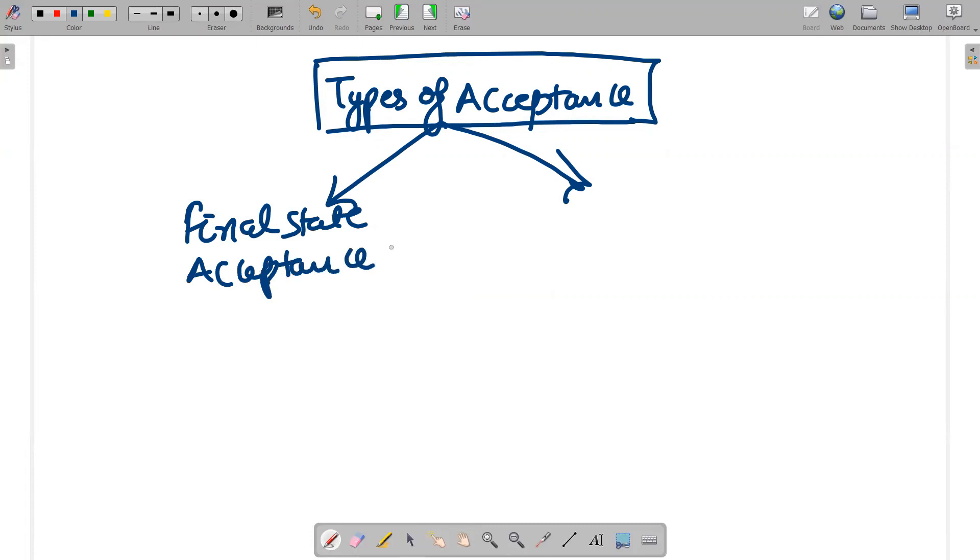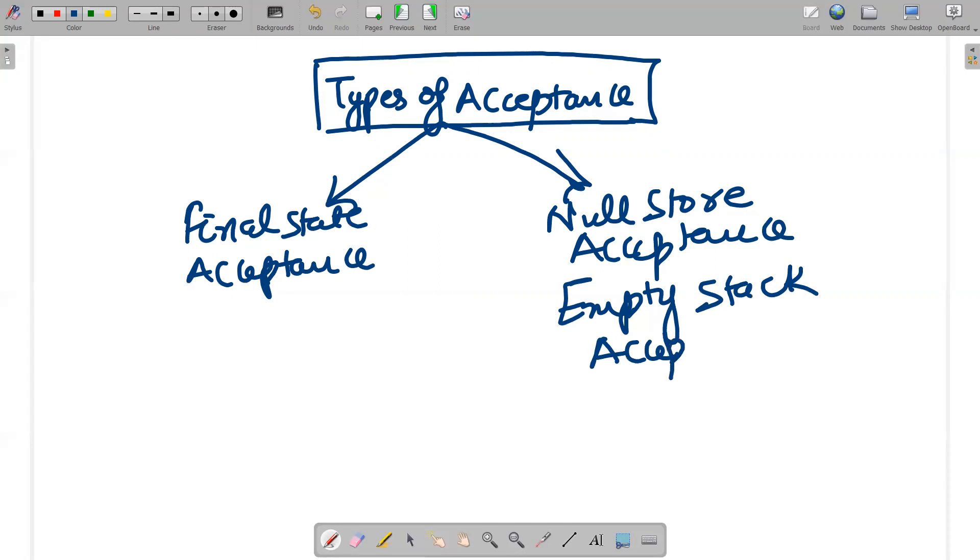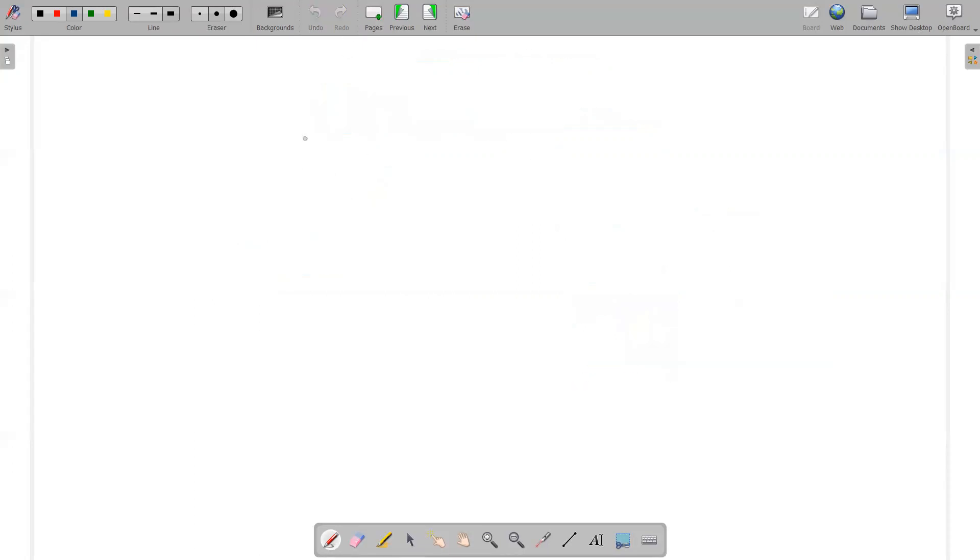And one is known as null store acceptance or empty stack acceptance. There is just one difference that I will tell you by writing. If I'm talking about a^n b^n, n greater than zero.